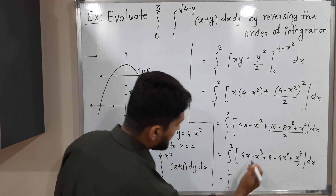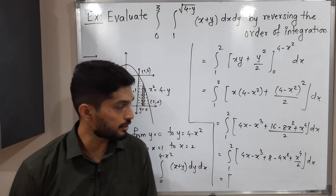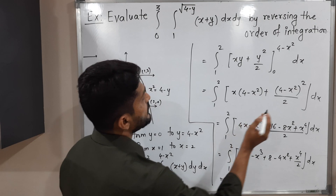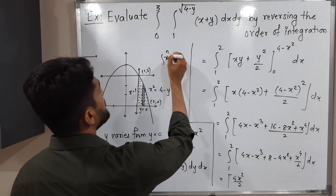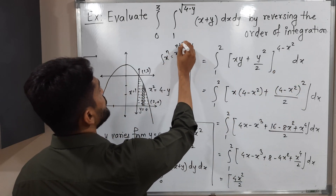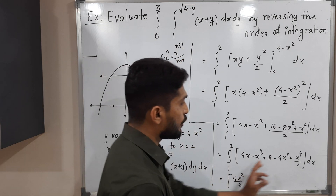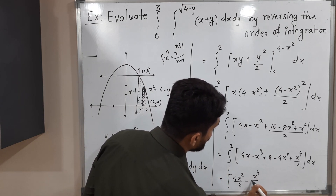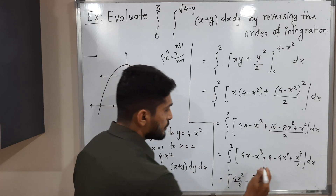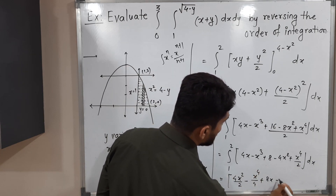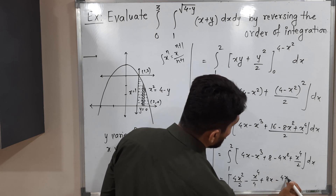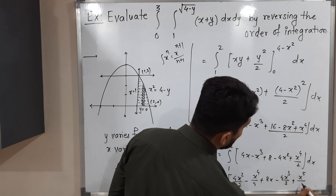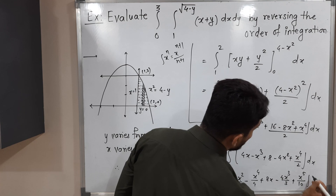Now integrating term by term using the power rule (integral of x to the n is x to the n+1 over n+1): 4 times x squared over 2, minus x to the 4th over 4, plus 8x, minus 4 times x cubed over 3, plus x to the 5th over 5 times 2, evaluated from 1 to 2.